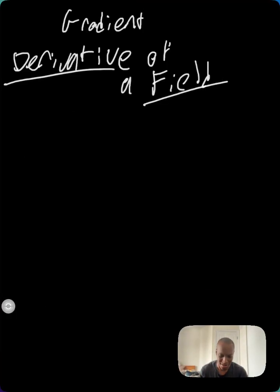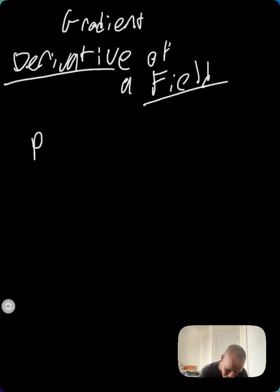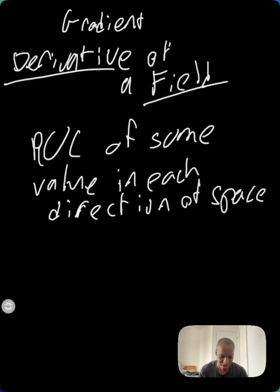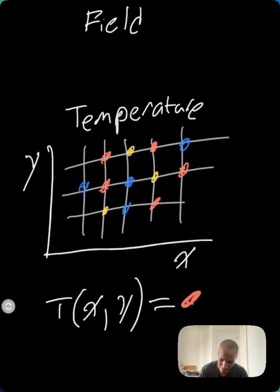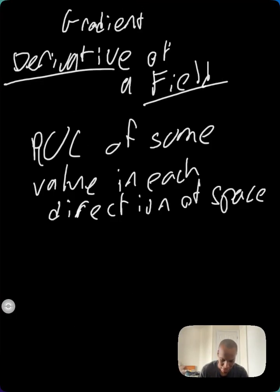The gradient is the derivative of the field. So it's how the field changes as you move in each direction of space. So rate of change of some value. In our example here, we have the value of temperature as it moves in each direction of space.